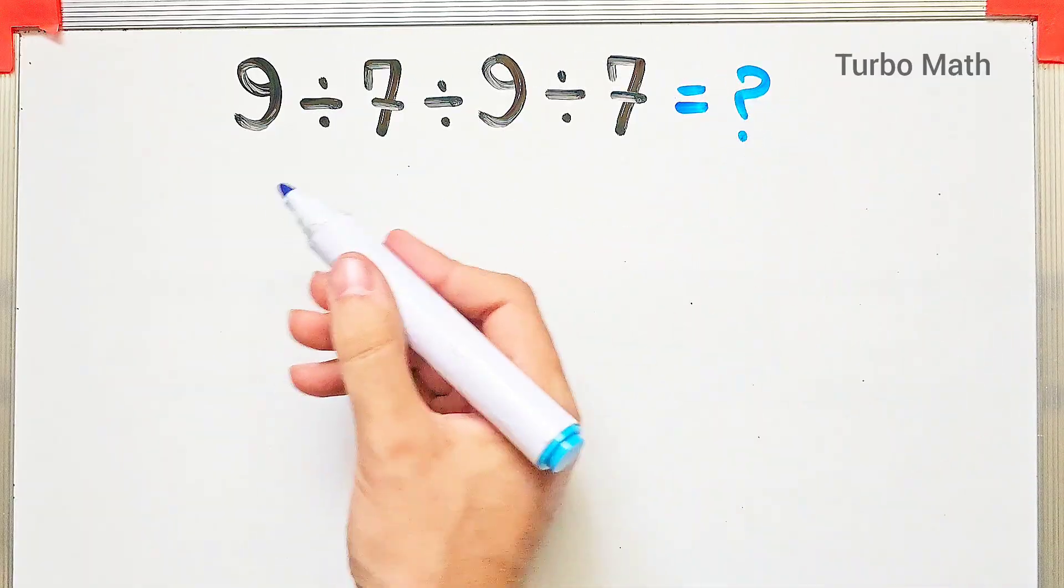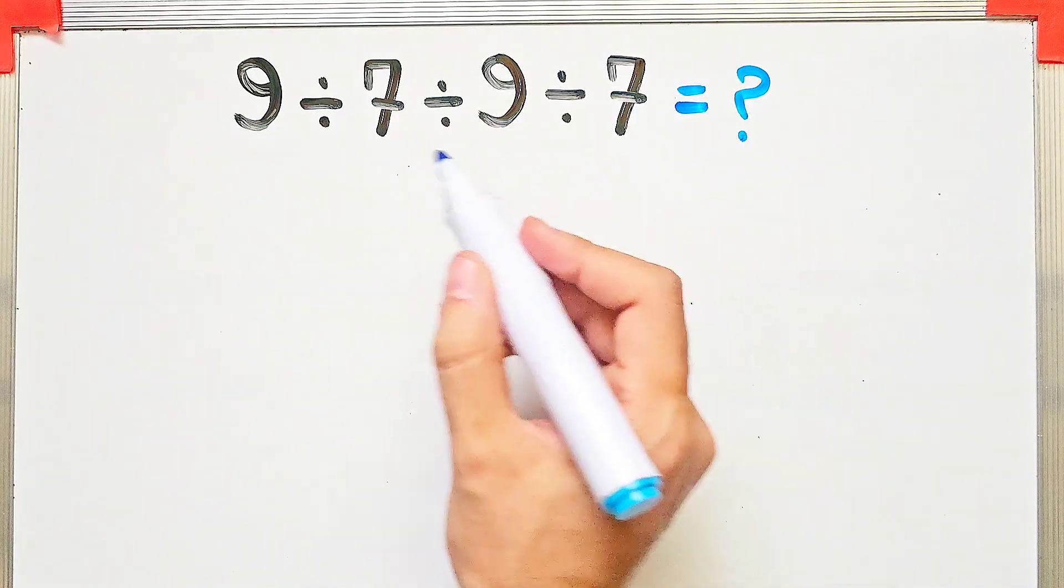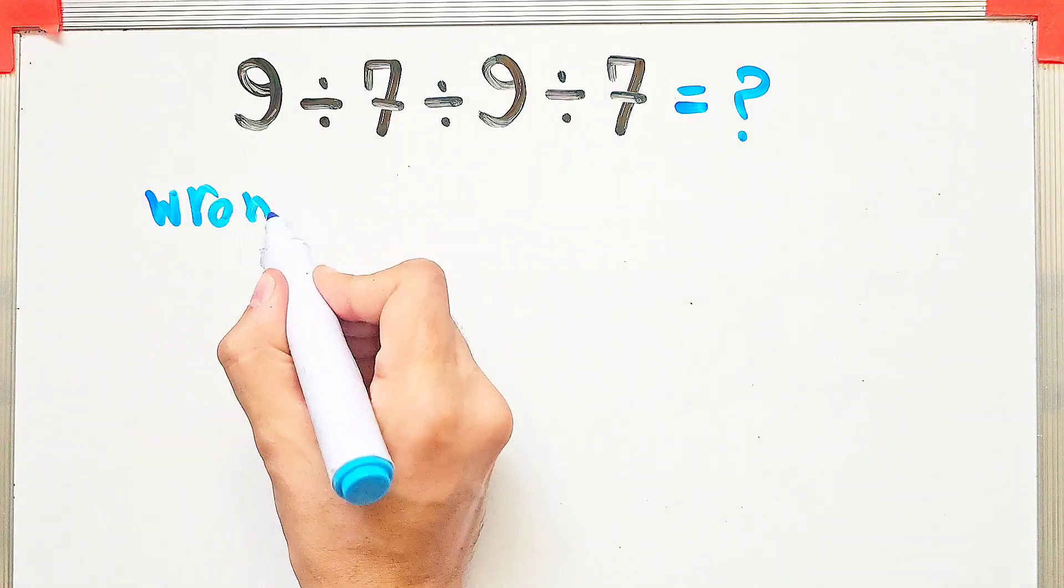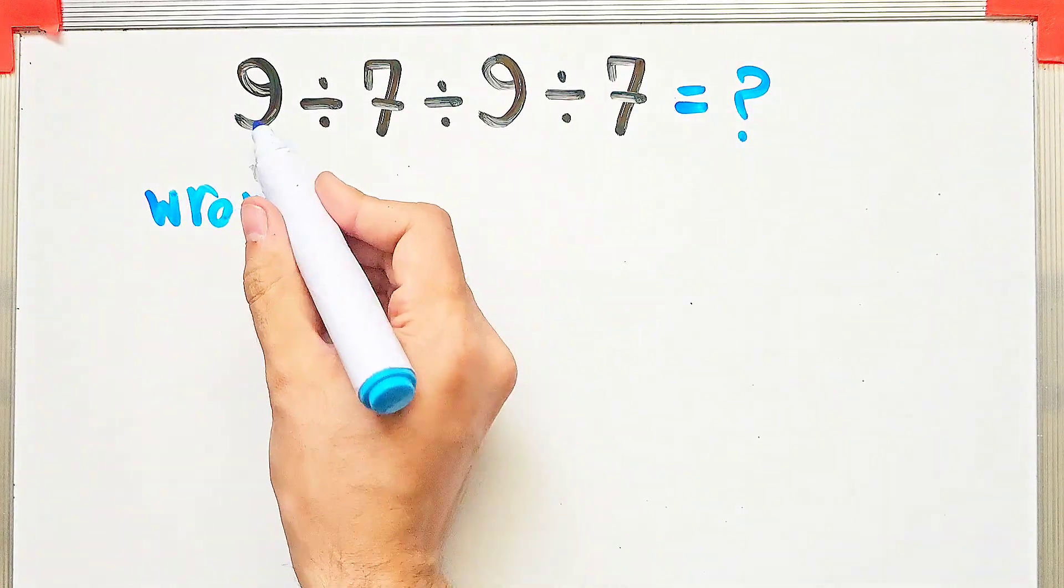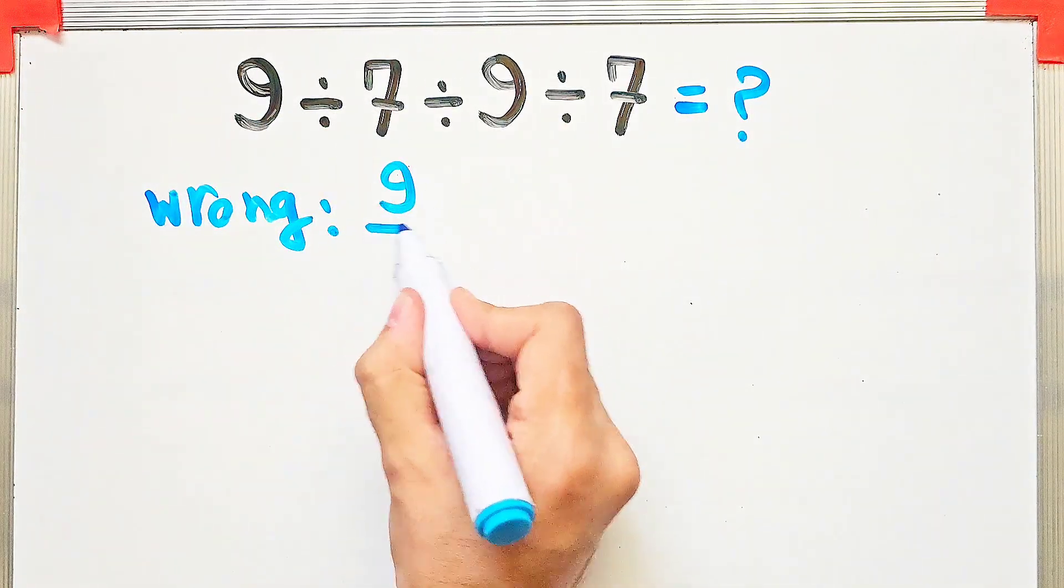In the wrong way of solving this question, some people start from the left and first do this division. They divided 9 by 7 and they say the answer of this part equals 9 over 7.